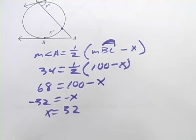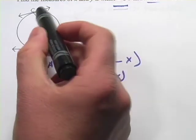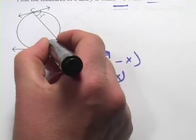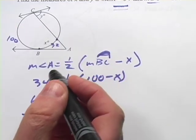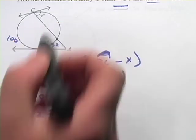Alright, so we've got half of this done. Now, let's look up here. So this is 32, this is 100, and then we want to figure out the measure of angle Y.